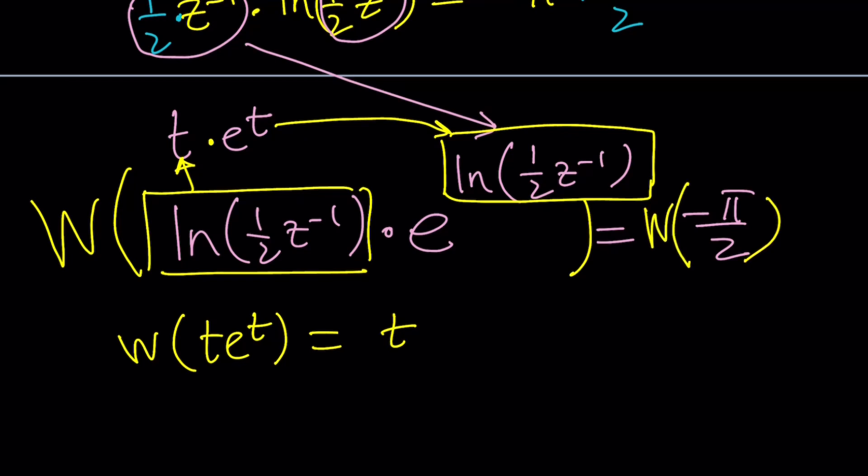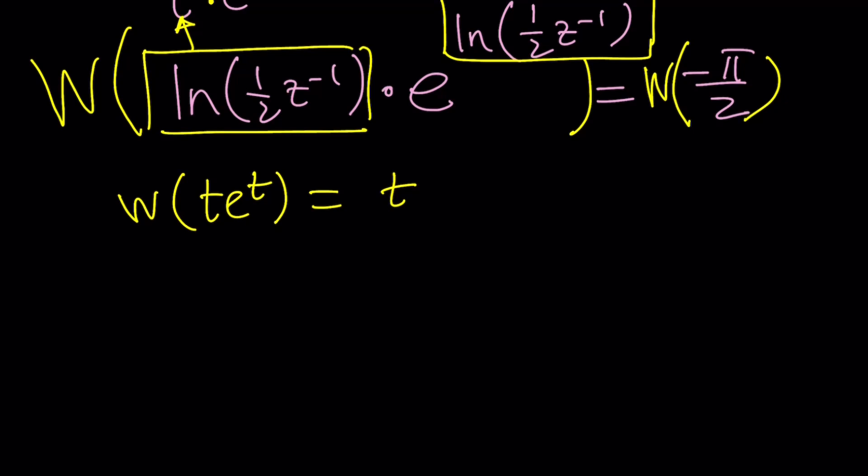And that's going to give us, from here, t is going to become ln(1/2 of z to the power negative 1). And then that's going to be w of negative π over 2. Of course, negative π over 2 also needs to be worked out. Well, we can do it. Not too hard. Let me show you real quick. That's actually going to be, why don't I take this, isolate it, and work on it.